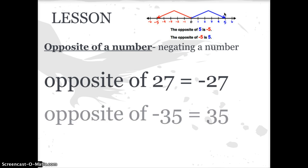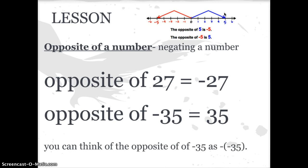Opposite of 27 is negative 27. The opposite of negative 35 is 35. And you can think of the opposite of negative 35, or any negative number, as a negative negative 35. If you have a negative number and you're finding the opposite of that, well, it's like if you have the opposite of an opposite, it turns you back to what you started. The opposite of a negative ends up being a positive. So a negative negative 35 actually is positive 35. And that's going to come back when we get into subtracting integers.